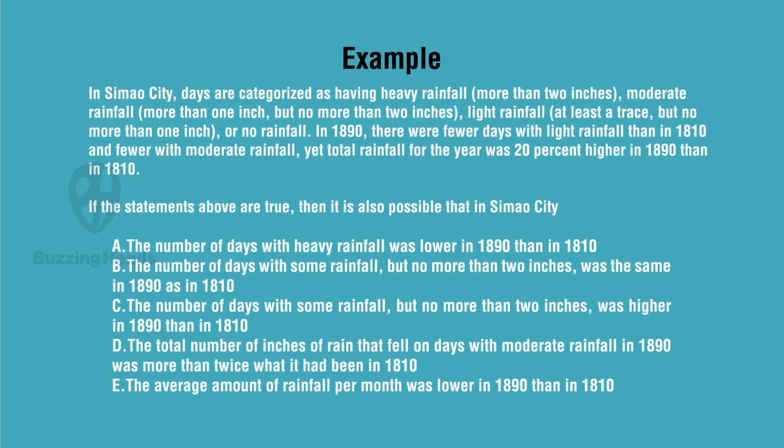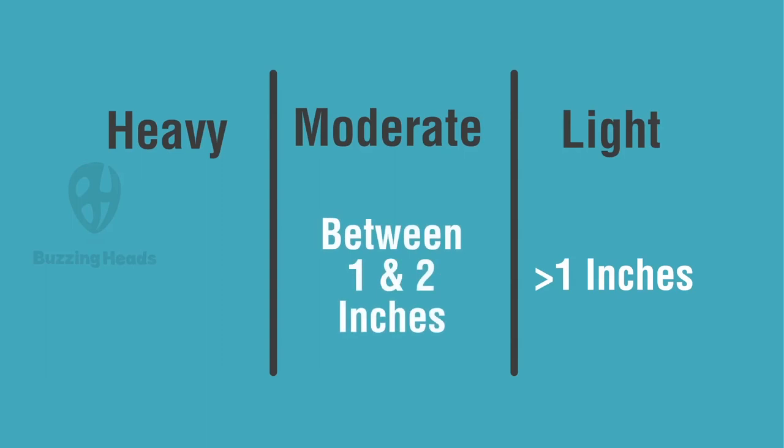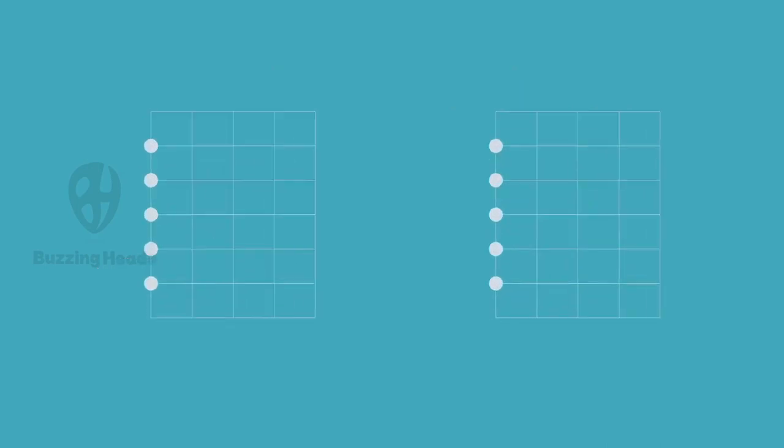Let's solve the next question. Please pause the video for two minutes and play when you are ready. Let us follow our process. Step 1. Read. The question only states some facts or premises. There are three categories of rainfall: heavy, moderate, light. Less than one inch, light. One or two inches, moderate. More than two inches, heavy rainfall. So that's given. The second thing given is light rainfall days were less in 1890 than in 1810.